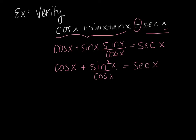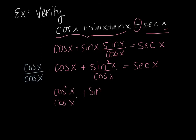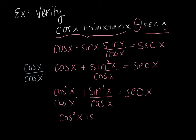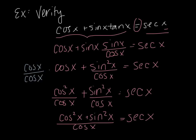Now I have a fraction, so I want a common denominator. I multiply the cosine x term by cosine x over cosine x, giving cosine squared x over cosine x. Adding the fractions together gives cosine squared x plus sine squared x, all over cosine x, equals secant x.